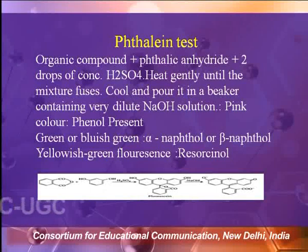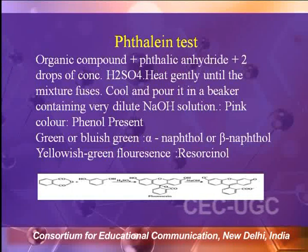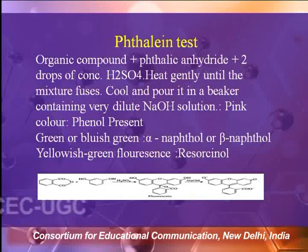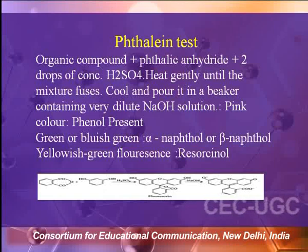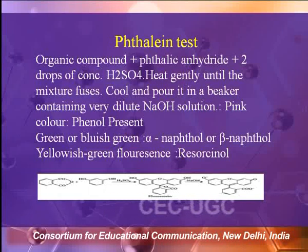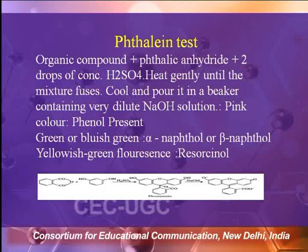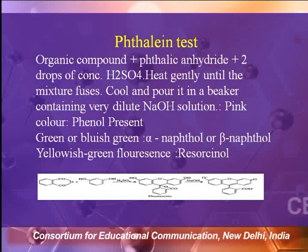Another test to detect the phenolic functional group is the phthalein test. Take the organic compound in a test tube, then add phthalic anhydride solution and two drops of concentrated H2SO4. Heat it gently until the mixture fuses. Cool and pour into a beaker containing very dilute NaOH solution. If a pink color appears on adding NaOH, a phenolic functional group may be present; if green color appears, alpha-naphthol; if bluish-green, beta-naphthol.